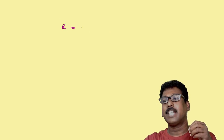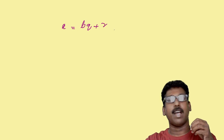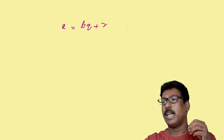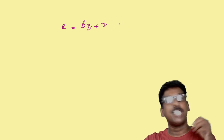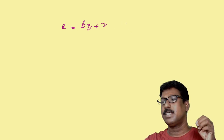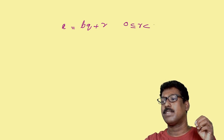In the last class, you learned about Euclid's division lemma. That is, for any integer a, it can be written in the form bq plus r.